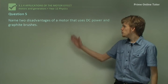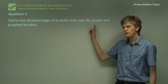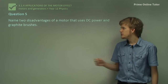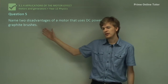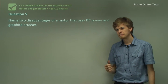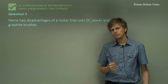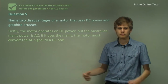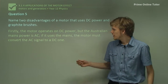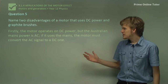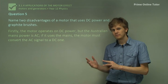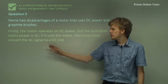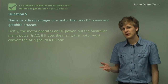Question five: name two disadvantages of a motor that uses DC power and graphite brushes. To answer this, we have to think about some of the disadvantages of DC power. The Australian mains power produced in generators and carried through the high-voltage lines is AC power — alternating current. This means we can't use it for a DC motor; we can't just plug a DC motor into the mains and expect it to work. We need a way to convert the AC signal into a DC signal. The alternative is to use batteries, but eventually they'll run dry.